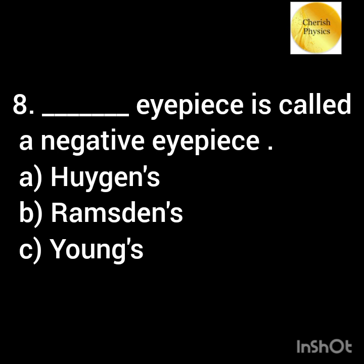Dash eyepiece is called a negative eyepiece. Option A: Huygens. Option B: Ramsden. Option C: Gauss.